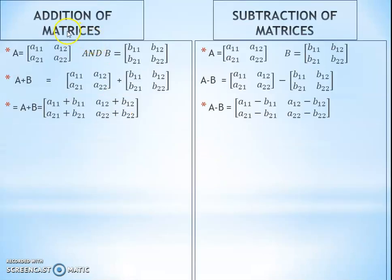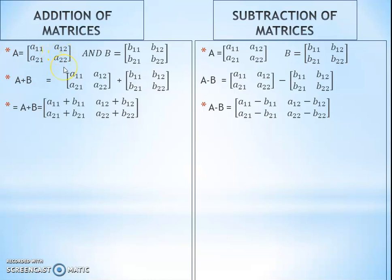First, let's start the revision of addition of matrices. Matrix A has elements A11, A12, A21, A22 — where A11 and A12 are in row number 1, A21 and A22 are in row number 2; A11 and A21 are in column number 1, and A12 and A22 are in column number 2.